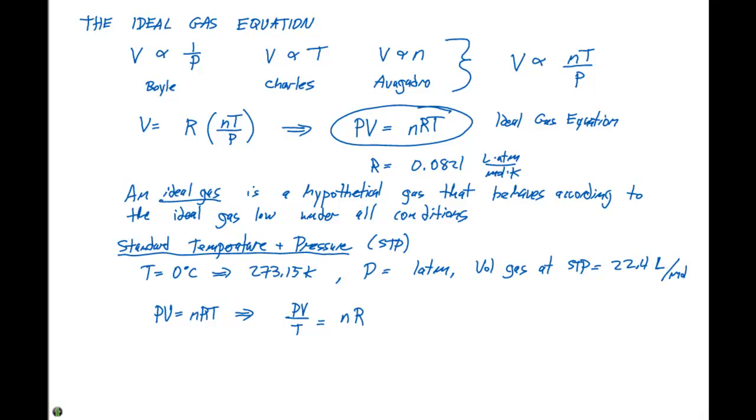So, if we start at a first set of conditions where we say P1, V1, and T1 is going to be equal to NR. We can then change the conditions of the pressure, the volume, and the temperature. And I'm going to say those are P2, V2, over T2, this is also going to be equal to NR.